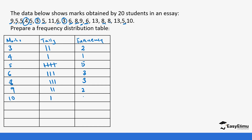Ten occurs once, so the frequency is one. We don't have twelve in our data, but we do have thirteen, and thirteen occurs twice. If you add all the frequencies, you are going to get 20 — that is the total number of students who were able to get the specific marks shown. That is how we create a frequency distribution table.